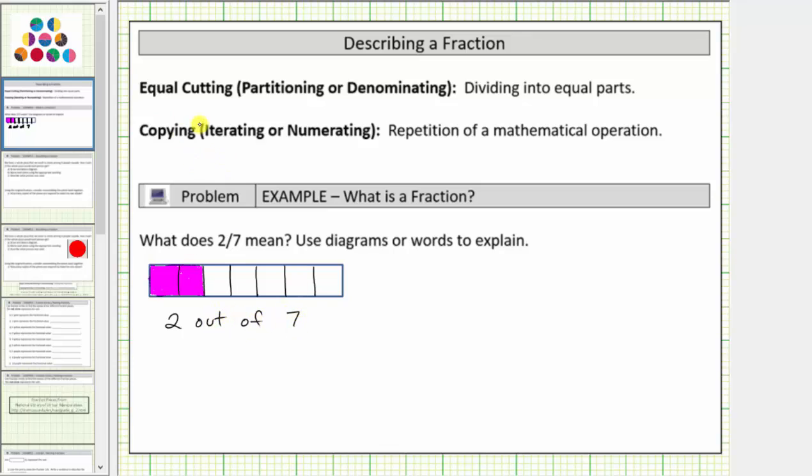Using the idea of copying, notice that one piece is equal to one-seventh, so we can think of two-sevenths as two copies of one-seventh.